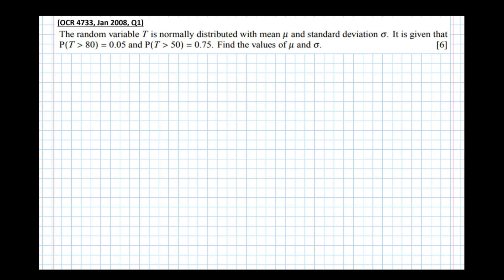In this video we're going to look at finding the mean and standard deviation of a normal distribution whose mean and standard deviation are unknown. The random variable t is normally distributed with mean mu and standard deviation sigma. It is given that the probability that t is greater than 80 is 0.05, and the probability that t is greater than 50 is 0.75. Find the values of mu and sigma.